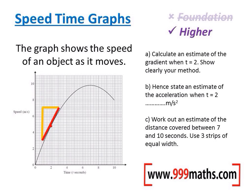So going up this triangle, I'm going up from 3 up to 7 — that's risen by 4. And then we've gone across from 1 second to 3 seconds, so we've gone across 2. The gradient is 4 divided by 2, which is 2. So the gradient at that point is 2.